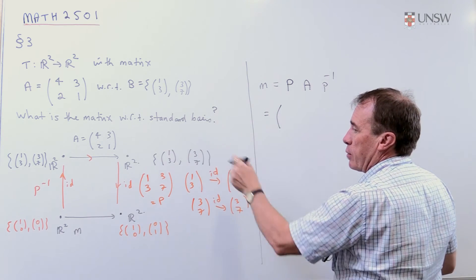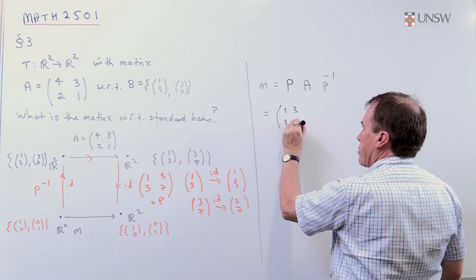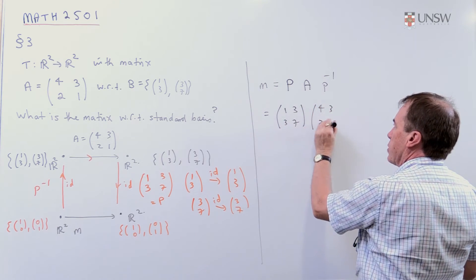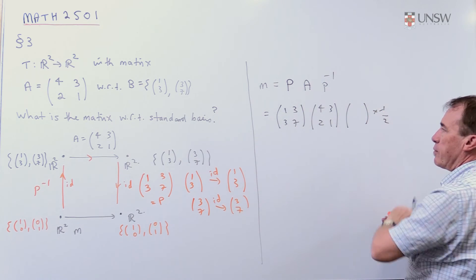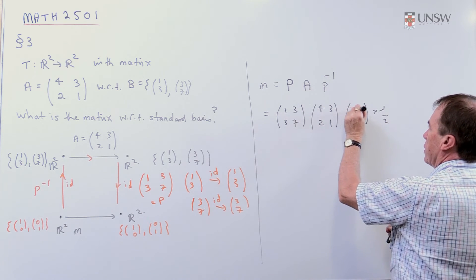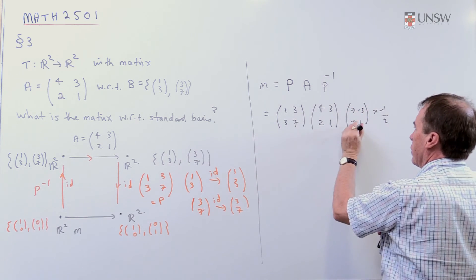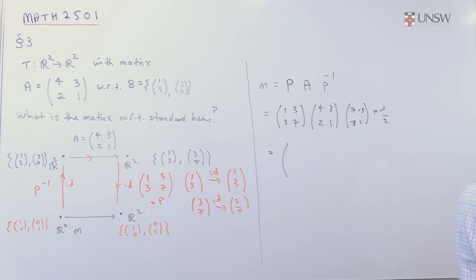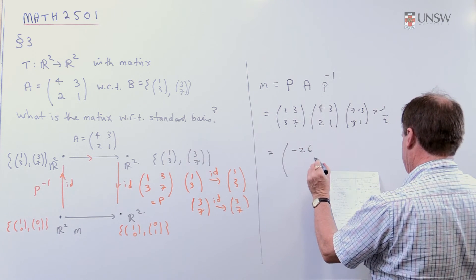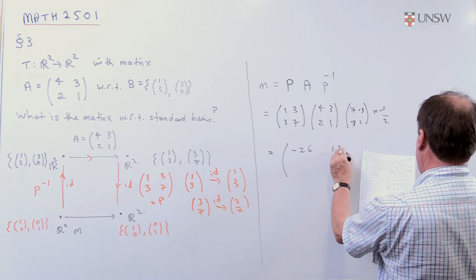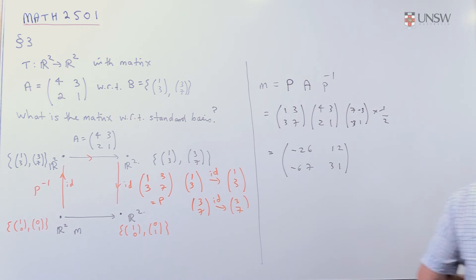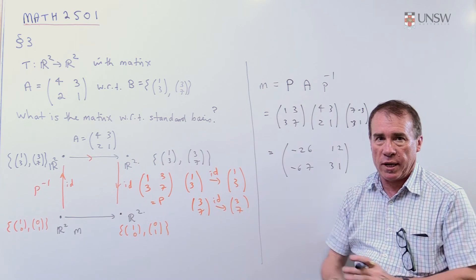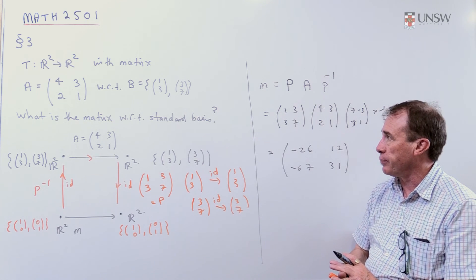Well, now finally, I just go in and copy all the matrices in. So that's (1, 3, 3, 7). This is the matrix (4, 3, 2, 1). And the inverse, well, that's got a determinant of minus 2. So I'll divide by the determinant. What do you do? You interchange those two, change the sign. And now you multiply all this out, which I'll leave you to check. And when I did the arithmetic on this, I got -26. In fact, 12, -67, and 31. So fairly complicated matrix back with respect to the standard basis.